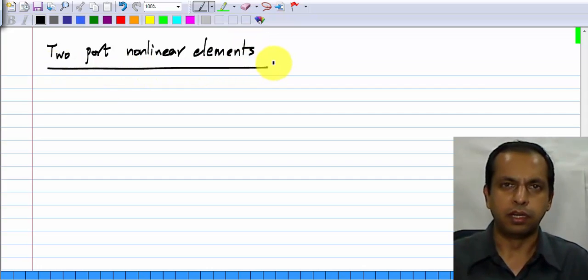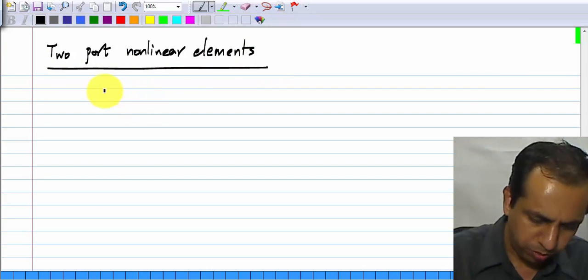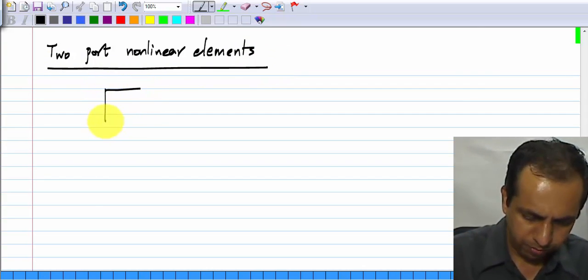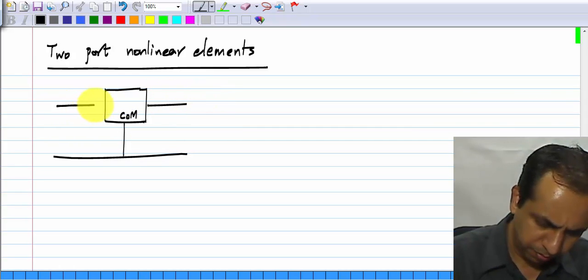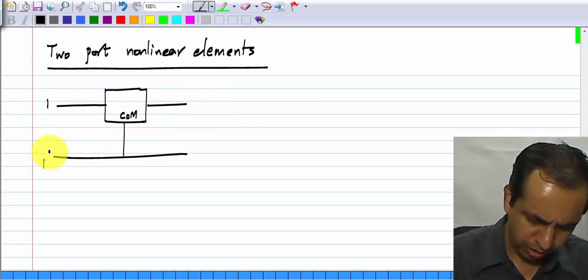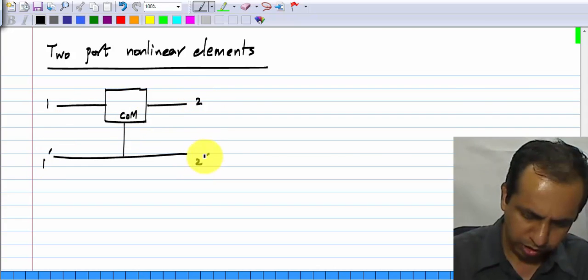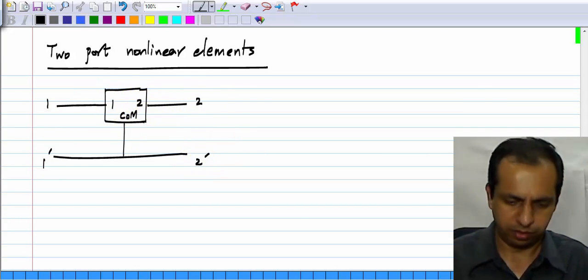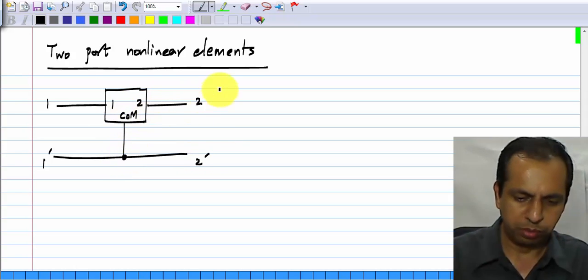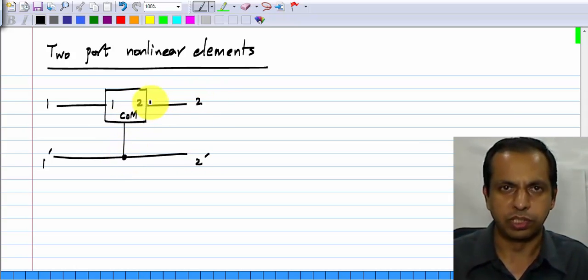For simplicity, I will consider three terminal two ports, that is there is a terminal which is common to the two sides. This is port one and that is port two. This common means that it is common to the two sides.